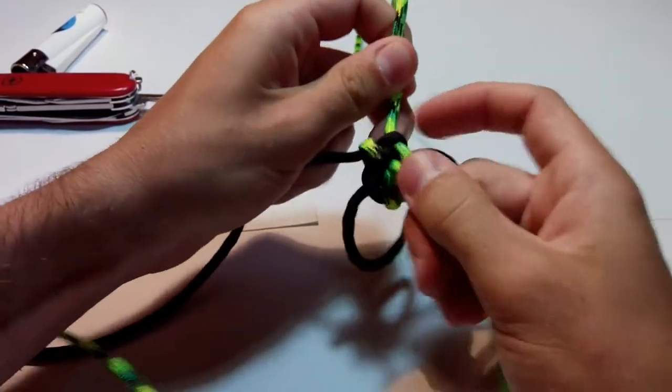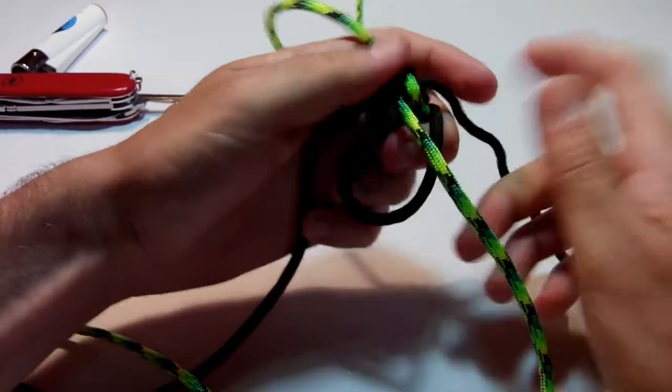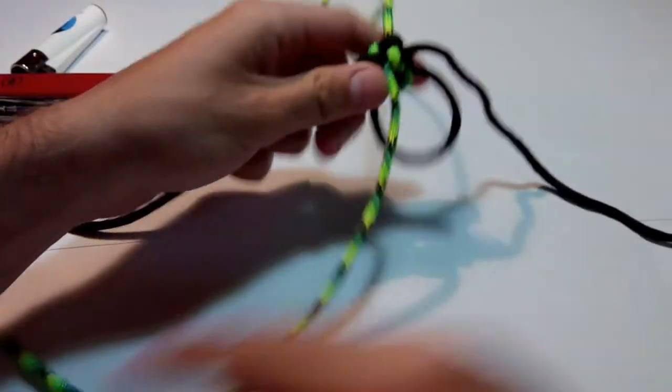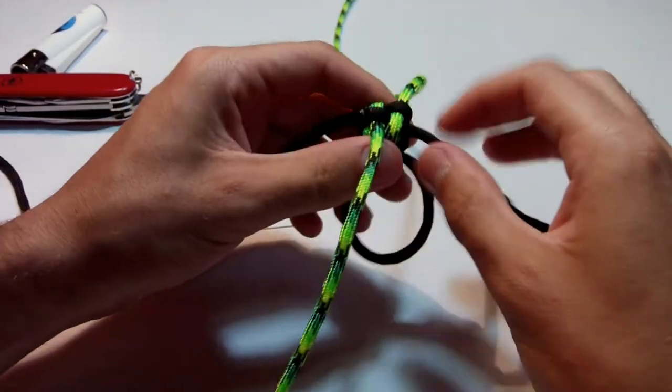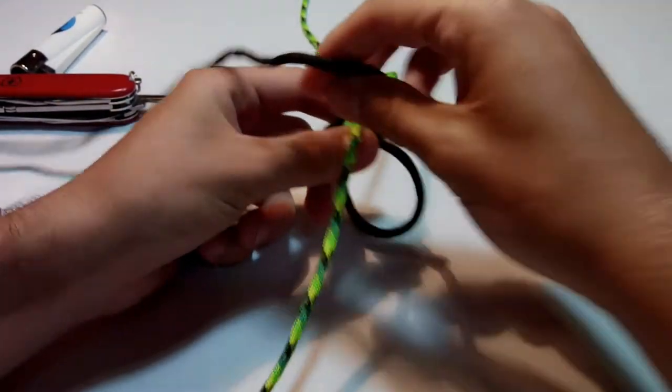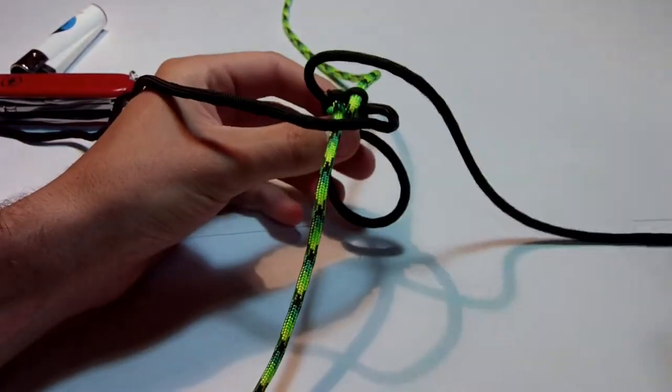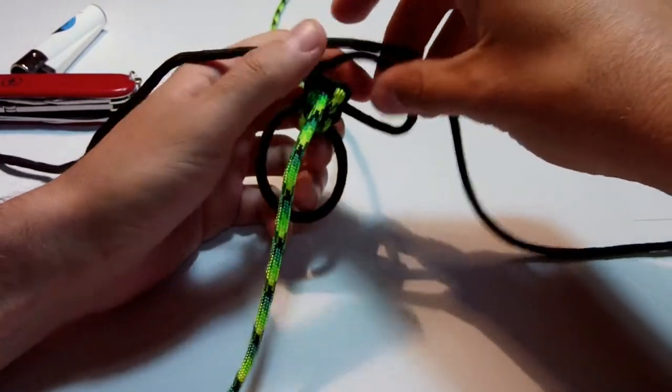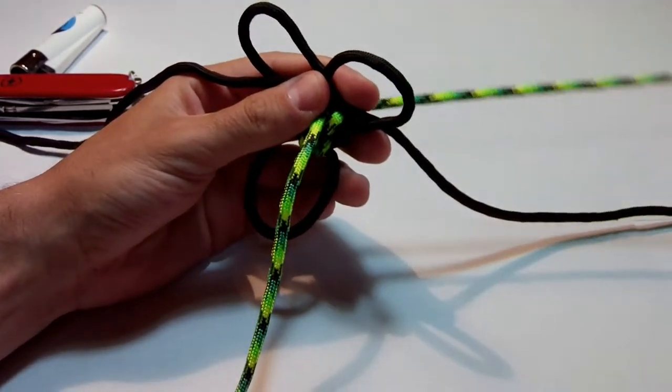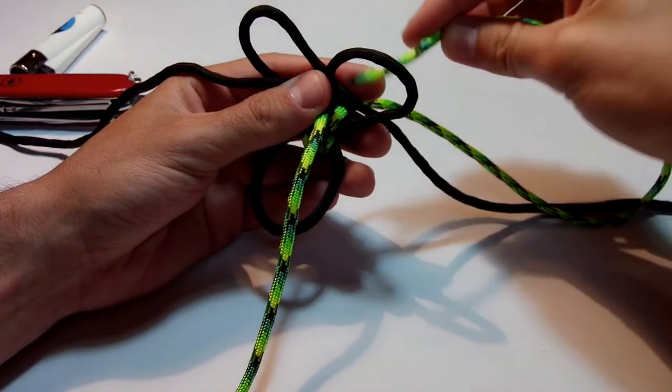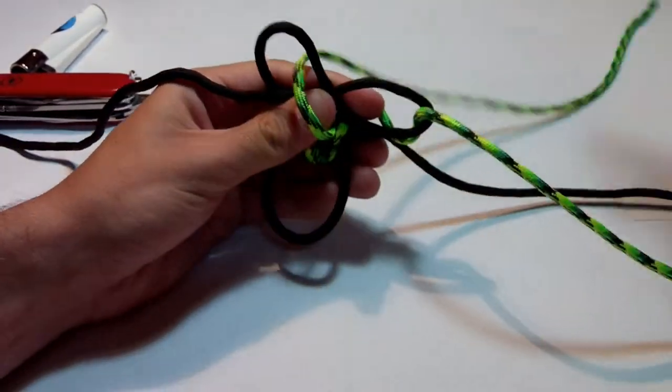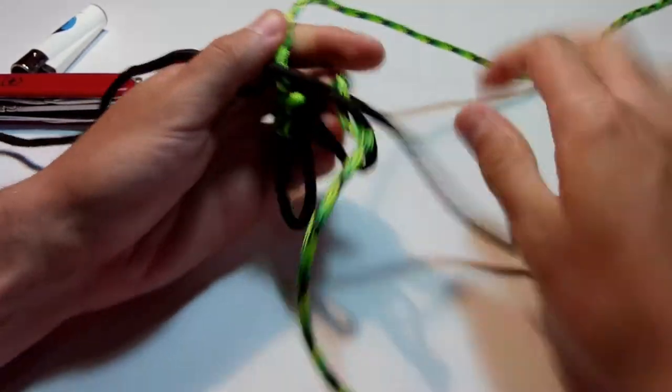As you can see, it's getting faster because the paracord is starting to get that square shape like we have here. Our last time guys before I finish this up - the right goes to the left, the left goes to the right. We just make a shape like this, goes over and in, over and in, just tie it.